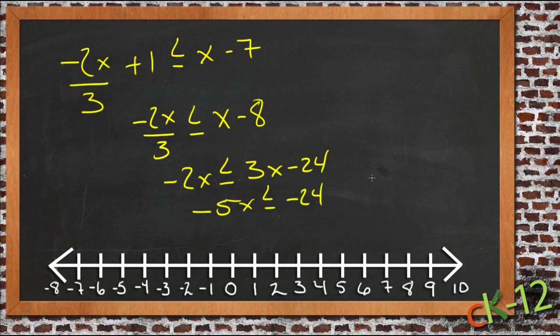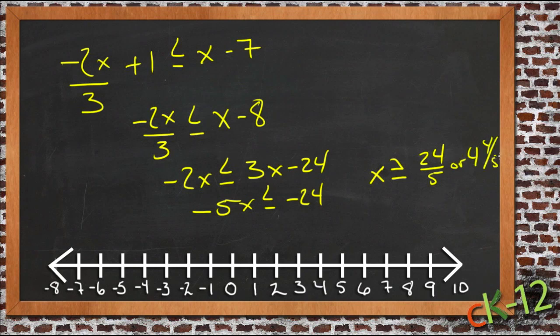And then divide everything by 5. And we'll get x, or negative 5 I mean, x is, and then since we've divided by a negative, we have to switch the sign, x is greater than or equal to 24 fifths or 4 and 4 fifths.